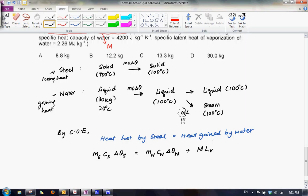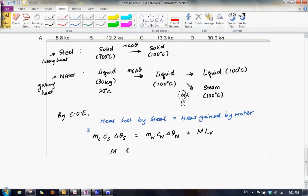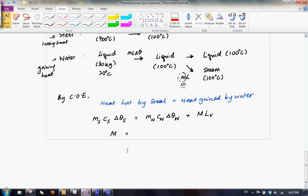And that forms our equation. And what we want to do is we want to find the mass of the steel, and so we make it the subject of the formula. So simplifying, what we will have is the mass of steel, the specific heat capacity of steel times the change in temperature of the steel, subtract away the mass of the water, specific heat capacity of the water times the change in temperature of the water, and we divide the whole thing by the latent heat of vaporization.